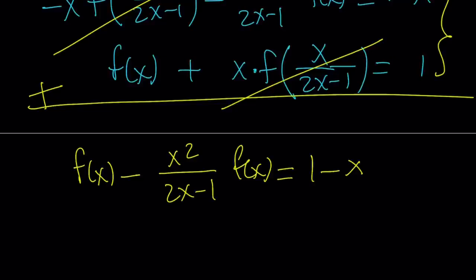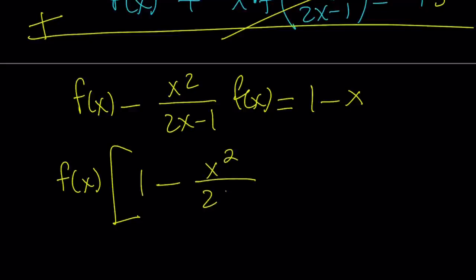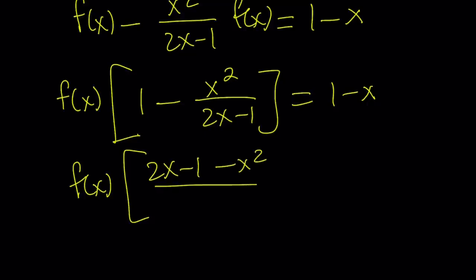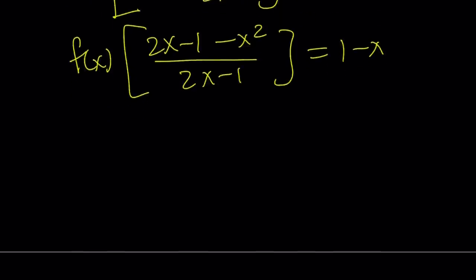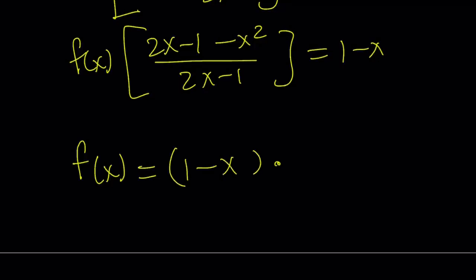Now the rest is easy: all I have to do is factor out f of x and then divide both sides by whatever is appropriate to isolate f of x. Factoring out f of x gives 1 minus x squared over 2x minus 1, and the result is 1 minus x. We want to simplify the bracketed expression first: that becomes 2x minus 1 minus x squared, all divided by 2x minus 1, equals 1 minus x. Now we divide both sides by that quantity — or multiply by the reciprocal — giving f of x equals 1 minus x times 2x minus 1 over 2x minus 1 minus x squared.